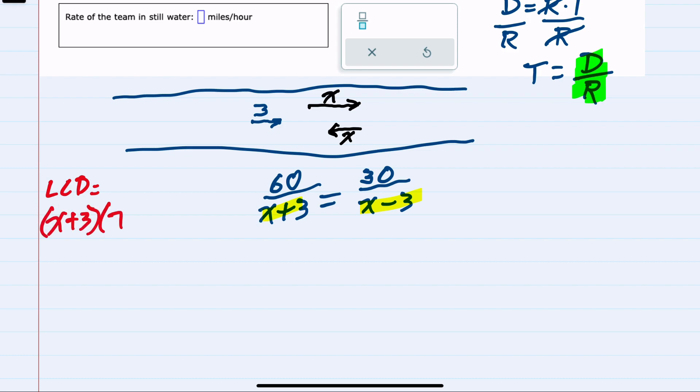I can multiply both sides of this equation by that lowest common denominator, which has the effect of canceling the denominator on the left-hand side, leaving me with the 60 times X minus 3.